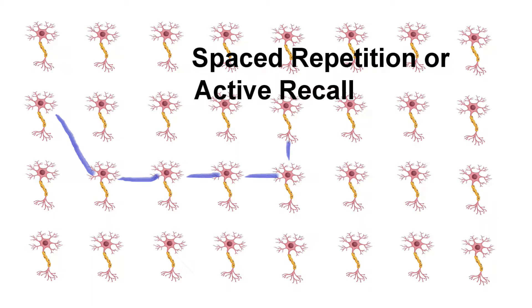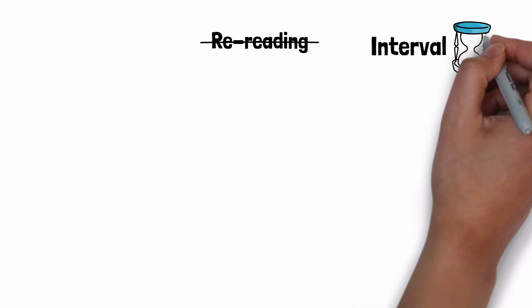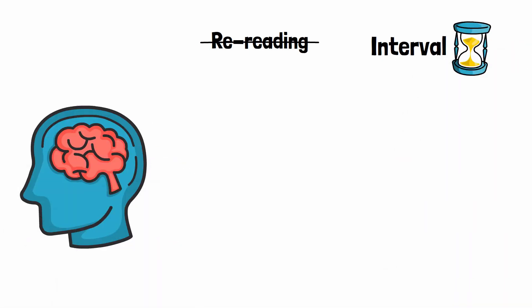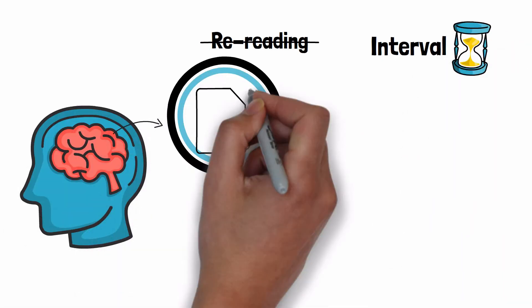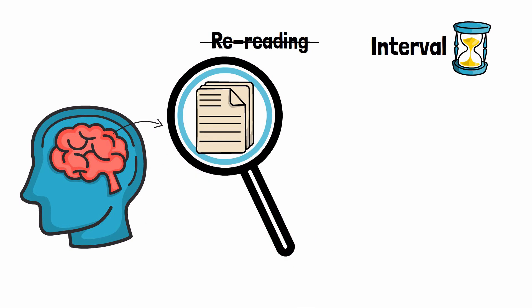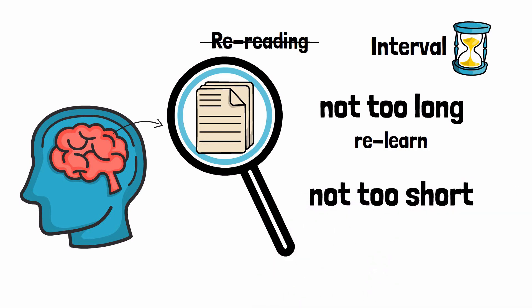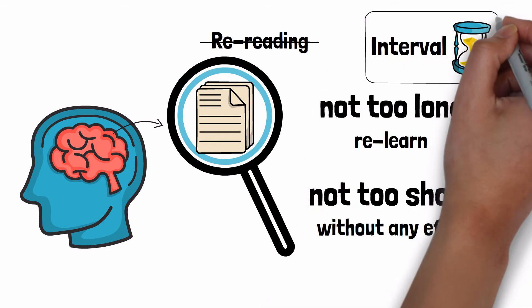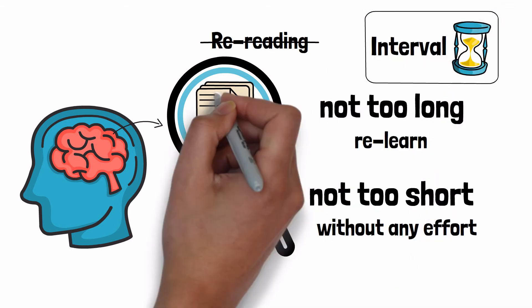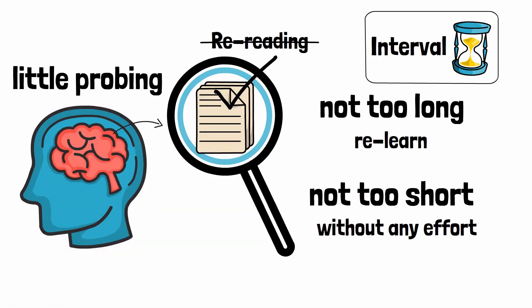What it means is that you should not be rereading the same material again and again. Instead, after a certain interval of time you should be recalling the information from memory. This interval should not be too long that you have to relearn the whole material and not too short that you will remember it without any effort. The interval should be designed in such a way that the information will come to you after little probing inside your memory.